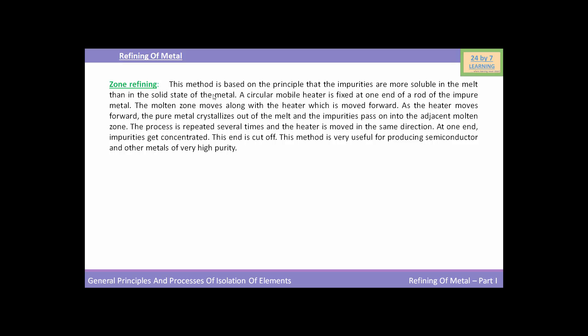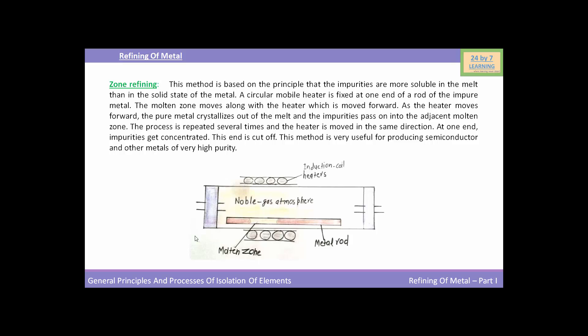The next method of metal refining is zone refining. This method is based on the principle that the impurities are more soluble in the melt than in the solid state of the metal. A circular mobile heater is fixed at one end of the rod of the impure metal, and the molten zone moves along with the heater which is moved forward. As the heater moves forward, the pure metal crystallizes out of the melt, and impurities pass on into the adjacent molten zone.